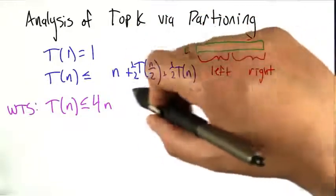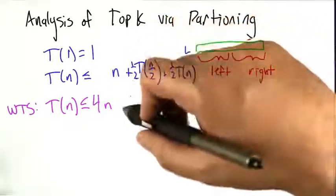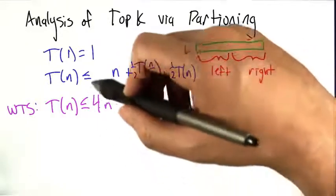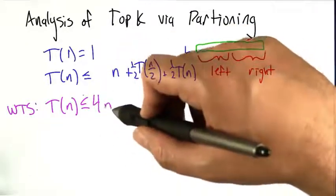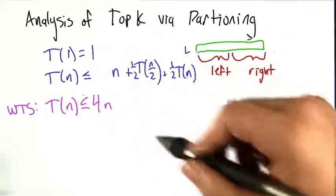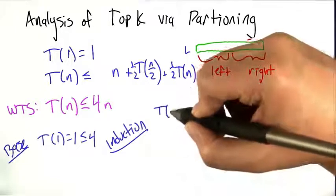Alright, so to solve this recurrence relation, I'm going to cheat a little bit because I know that 4n is going to be a good upper bound on the value of T. So all we have to do is actually prove that that's true. We don't actually have to figure it out. So to prove that this is true, we're going to proceed by induction.